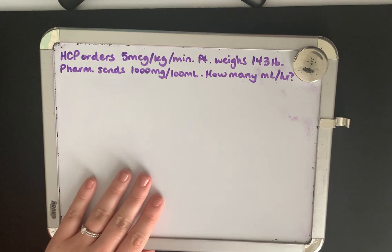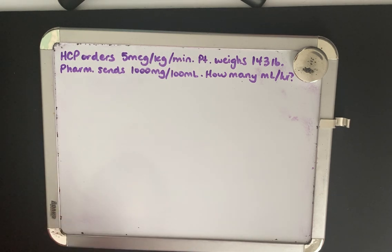So our healthcare provider ordered propofol to be administered at five micrograms per kilogram per minute. Our patient weighs 143 pounds. The pharmacy sends the medication labeled as 1000 milligrams in 100 mLs and we want to know how many mLs per hour are we going to set our pump.